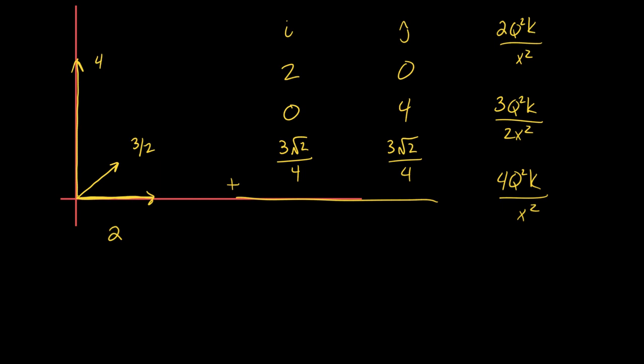We add down the columns in each vector. It's at this point where I really don't care if we keep it in terms of the root of 2. Let's turn it into a decimal. 1.41 times 3 divided by 4. 1.06. 1.06 I hat plus 1.06 J hat.